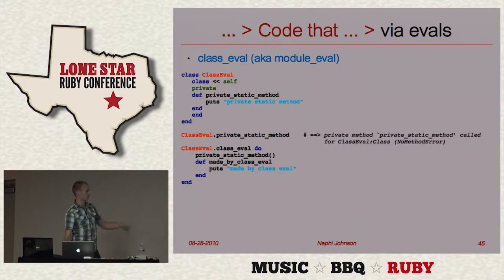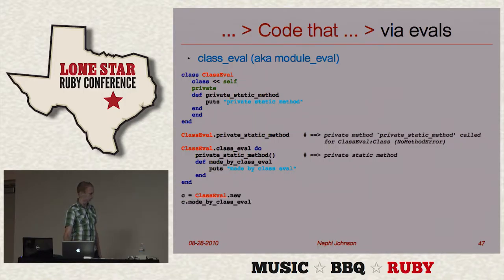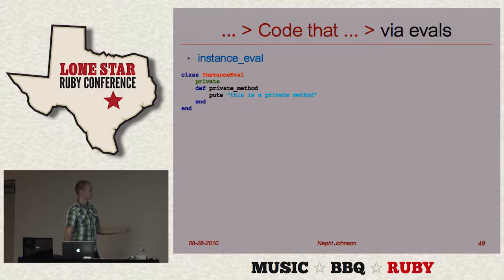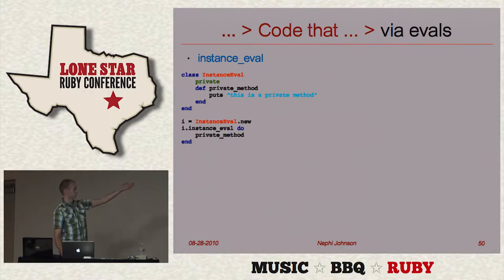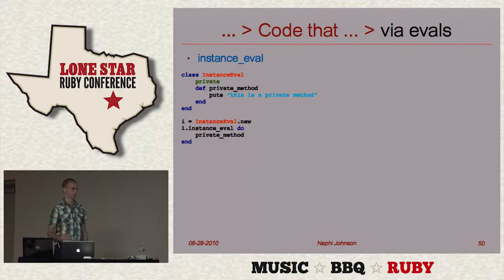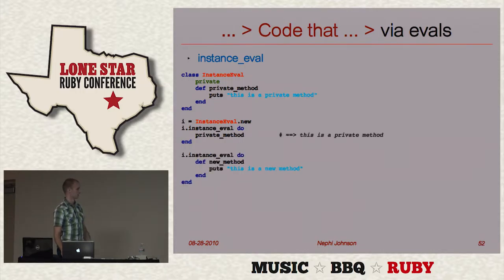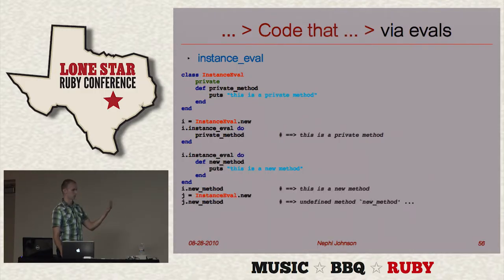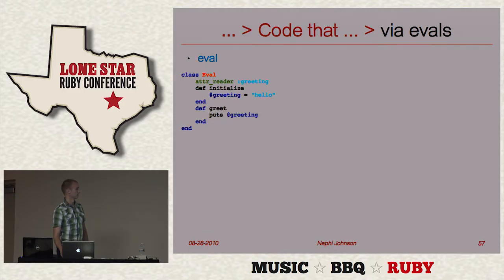With class_eval: here we've got a private static method. You can't call it normally and it raises an error. But if you call it within a class_eval block, that works fine. You can also add methods to it — adding a method made by class_eval means any new class_eval instances will have that method. With instance_eval, just like the name says, it applies only to that instance of the object. It's kind of like reopening the class and running code inside of the class — that's why we're able to call the private method.